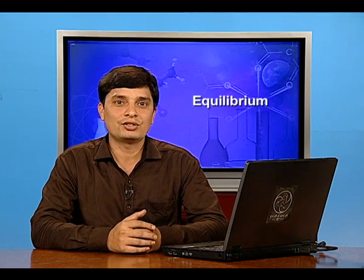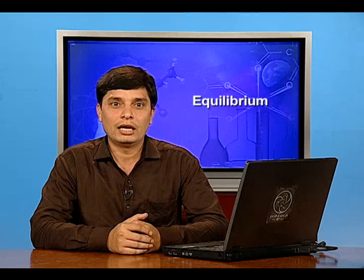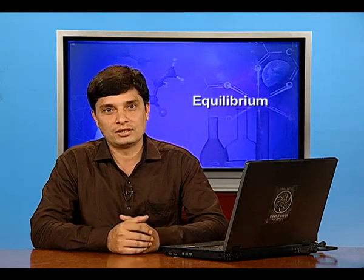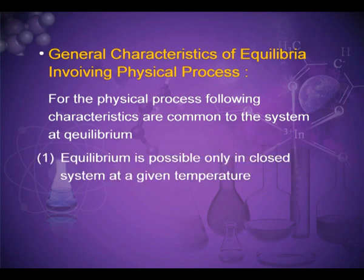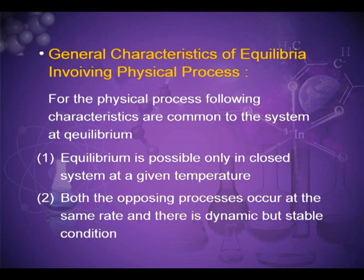General characteristics of equilibrium involving physical process. For the physical process, the following characteristics are common to the system at equilibrium. First, equilibrium is possible only in a closed system at a given temperature. Second, both the opposing processes occur at the same rate and there is a dynamic but stable condition.